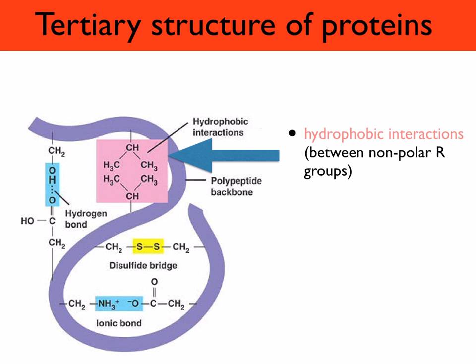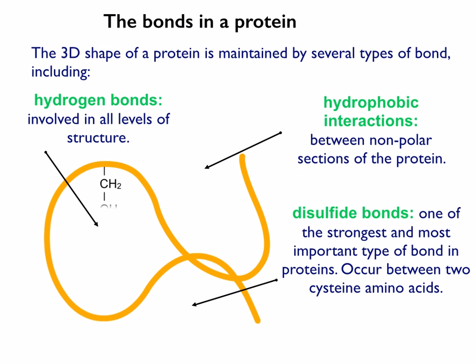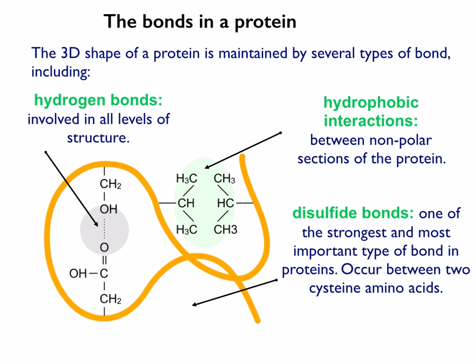You've also got hydrophobic interactions, which occur when non-polar R groups repel water — they interact towards the middle of the protein, away from the water. The different types of bonds in the tertiary structure are hydrogen bonds, hydrophobic interactions, and disulfide bonds. The one type not shown in the diagram is the ionic bond.